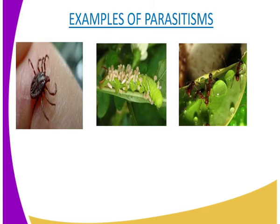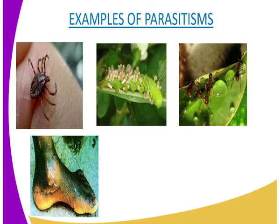Parasites found on the surface of the host are known as ectoparasites. All the parasites we are seeing on our screen are ectoparasites — for example, ticks. Those found inside the body of the host are known as endoparasites. An example of an endoparasite is what we are seeing in our fourth diagram, where the parasite gets inside the body. Parasites weaken their host, cause or transmit diseases, which may kill their host, thus reducing their numbers and distribution.